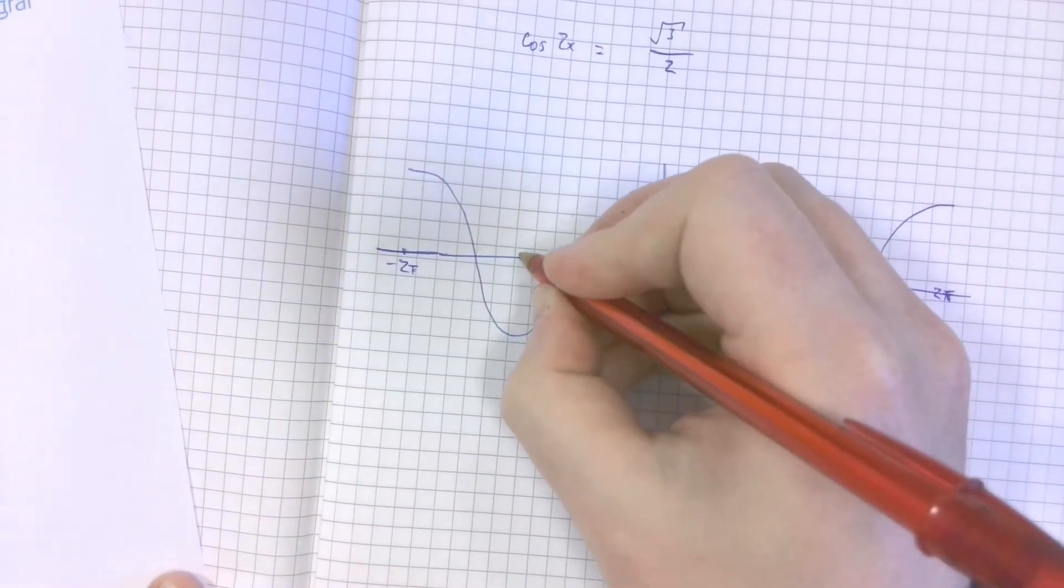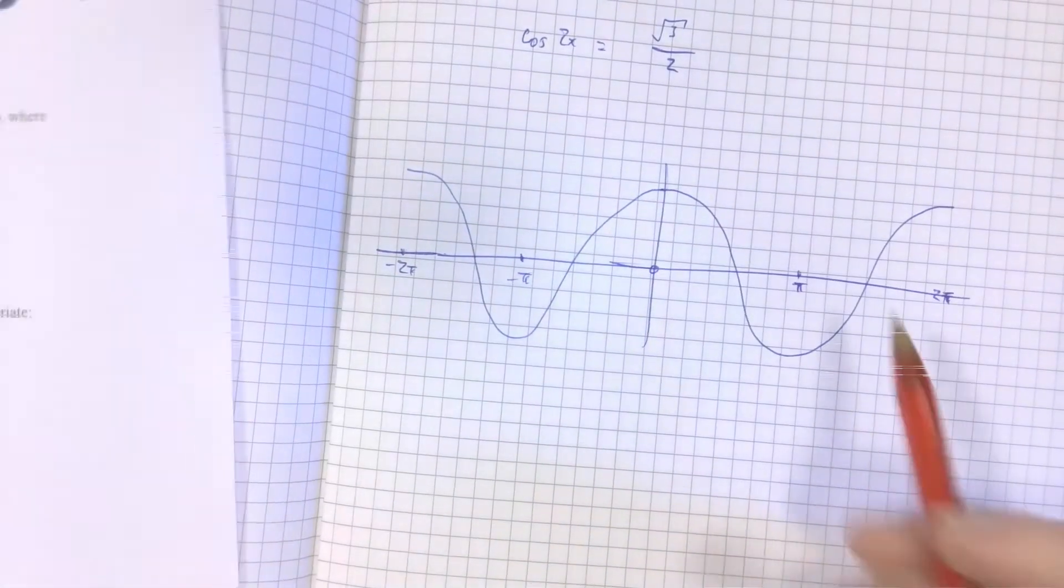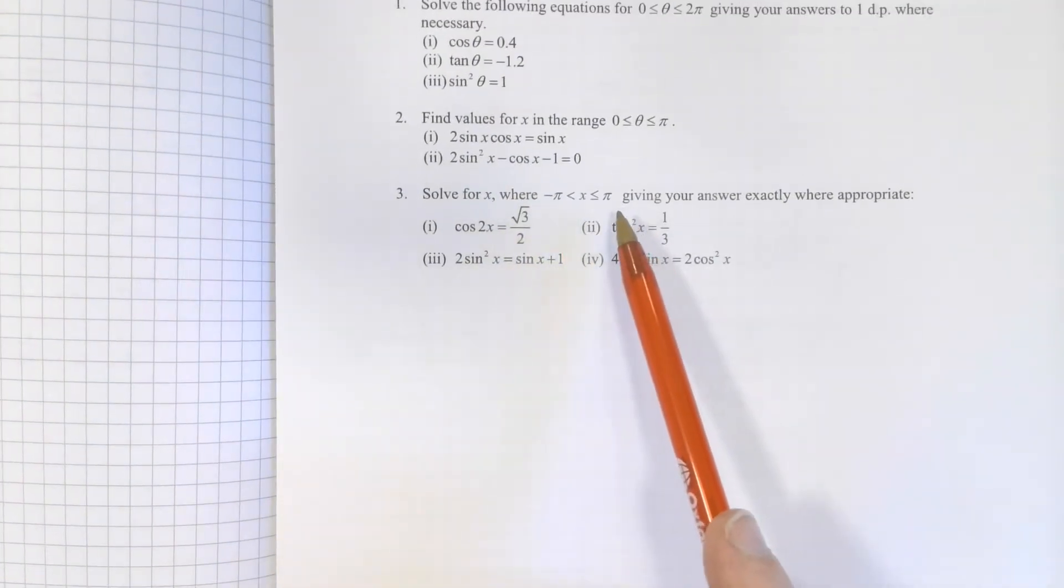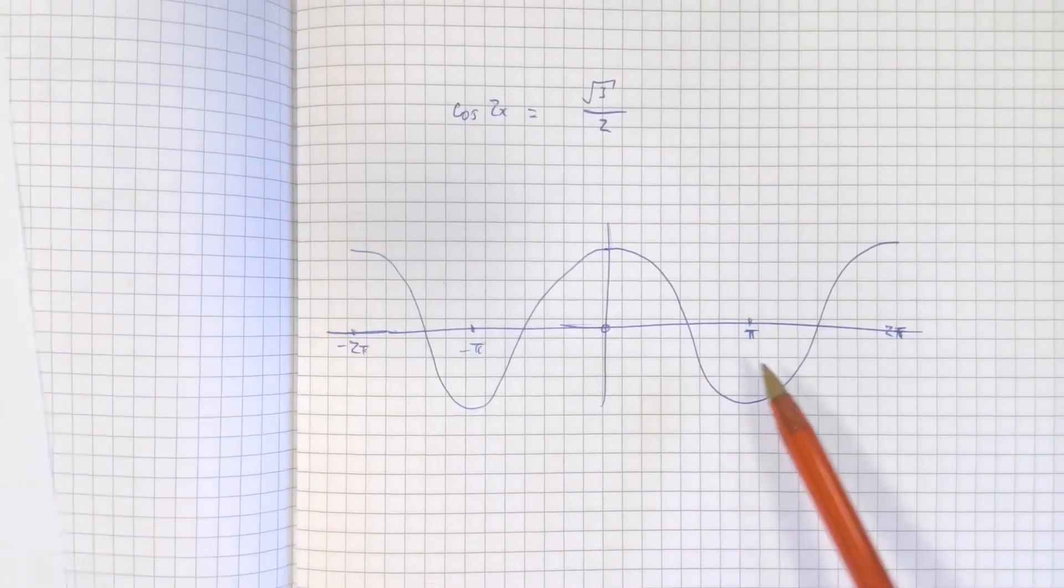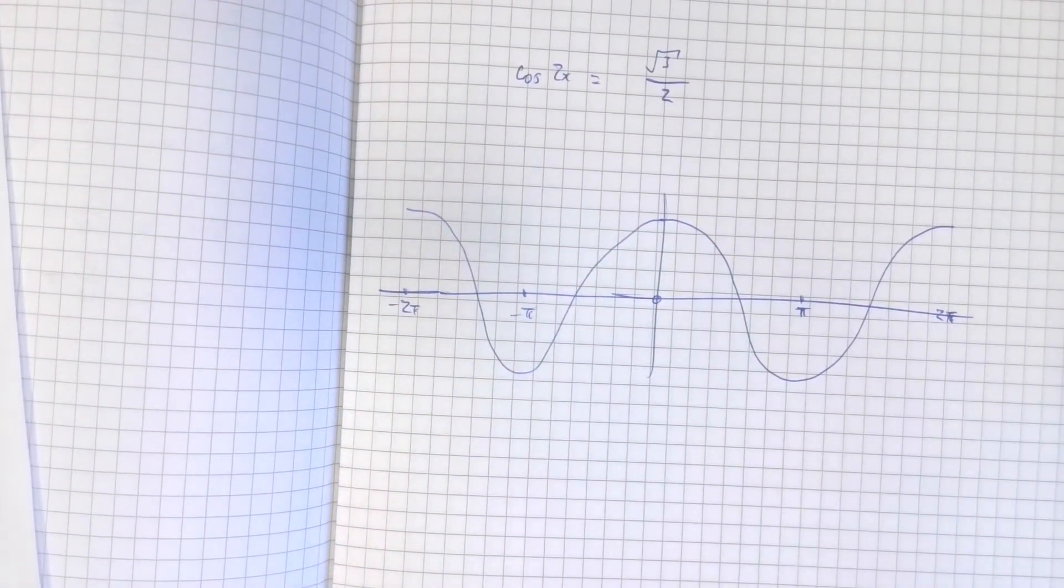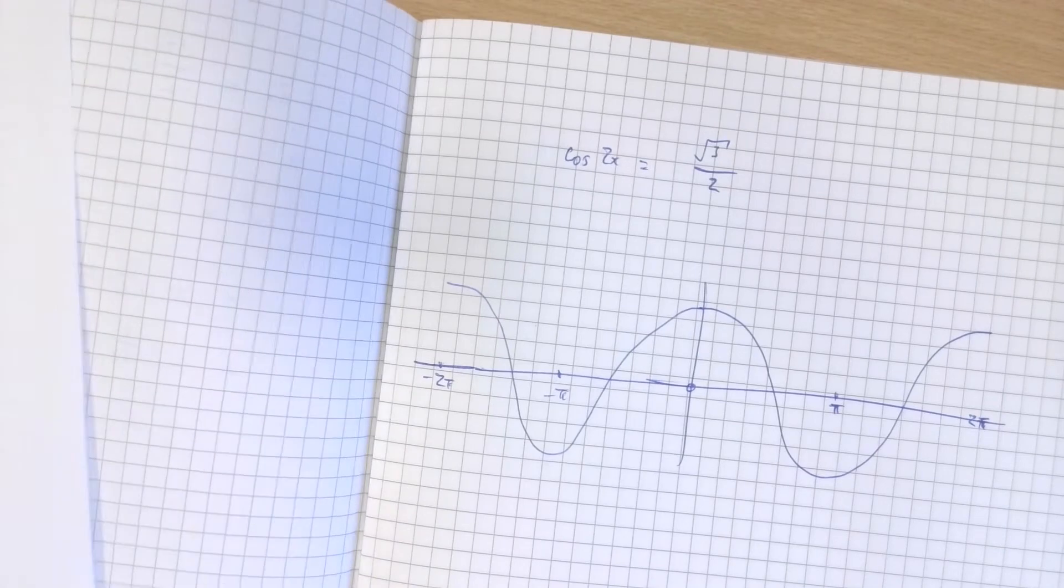I'm also going to go into negatives here because the question range goes between negative π and positive π. So it just makes sense to extend this cos line into the negative in this particular case.